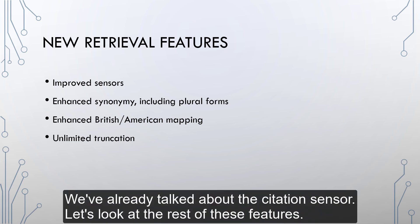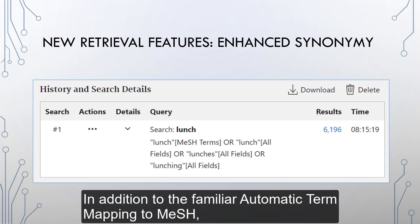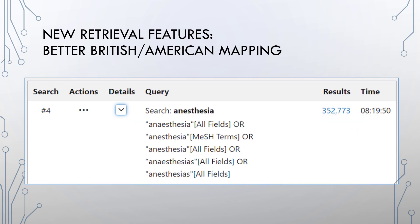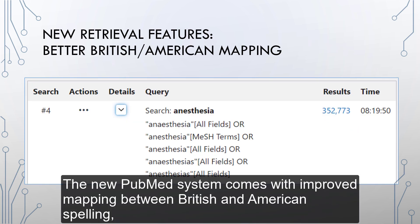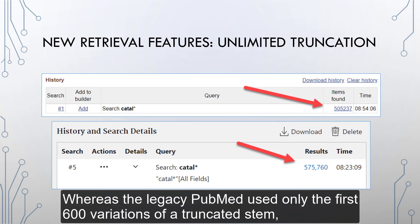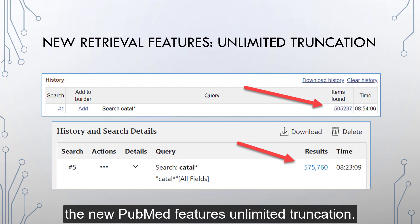We've already talked about the citation sensor. In addition to the familiar automatic term mapping to MeSH, the new PubMed includes additional useful synonymy, including plural forms. The new PubMed system comes with improved mapping between British and American spelling, so you don't have to worry about including the variant forms in your search. Whereas the legacy PubMed used only the first 600 variations of a truncated stem, the new PubMed features unlimited truncation.